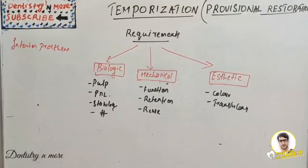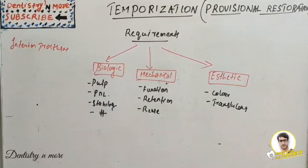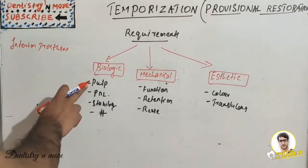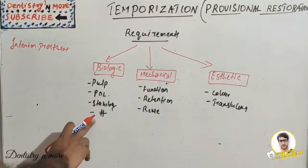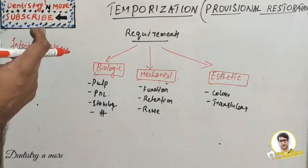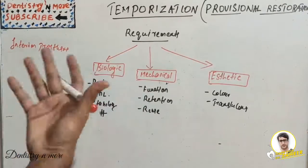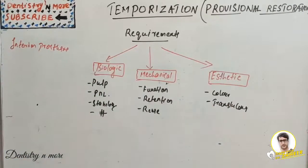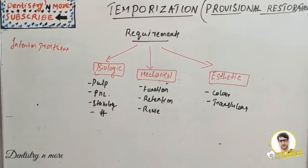The basic requirements for temporization fall into three categories: biologic, mechanical, and aesthetic. In biologic requirements, we need to protect the pulp, protect periodontal health, maintain positional stability, and prevent fracture. In mechanical requirements, there are factors affecting retention, removal, and re-use. For aesthetics, we need to consider color stability, color compatibility, and translucency.